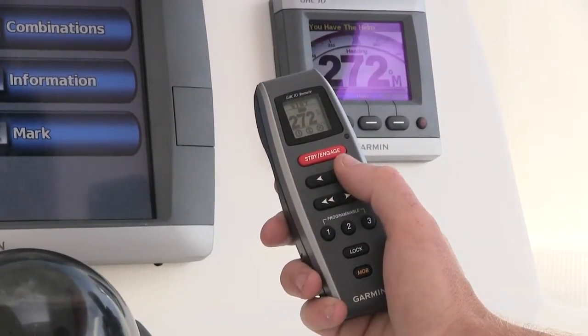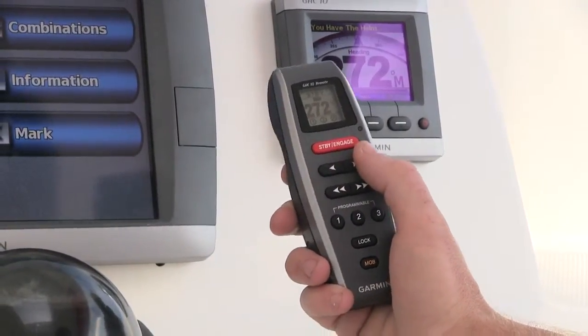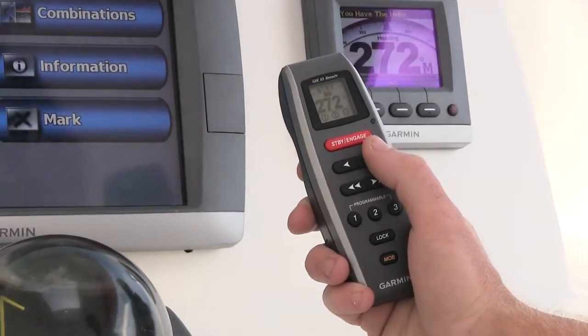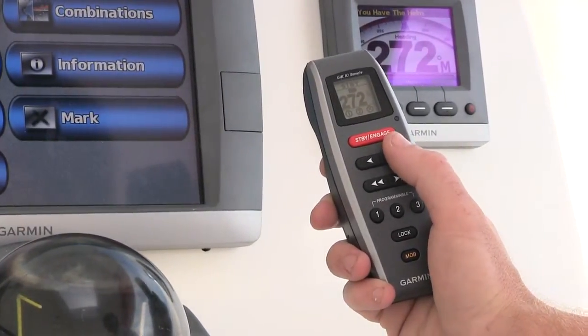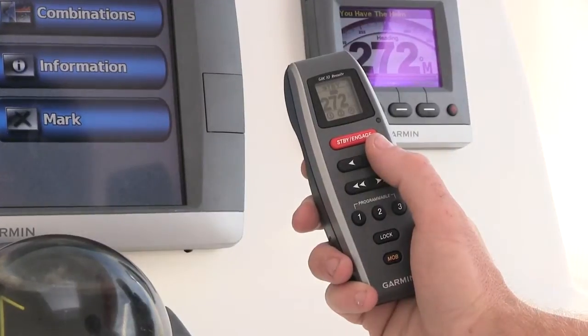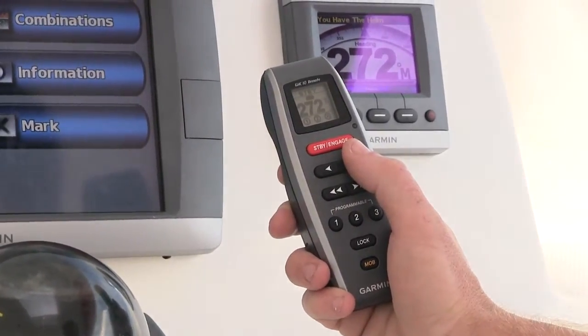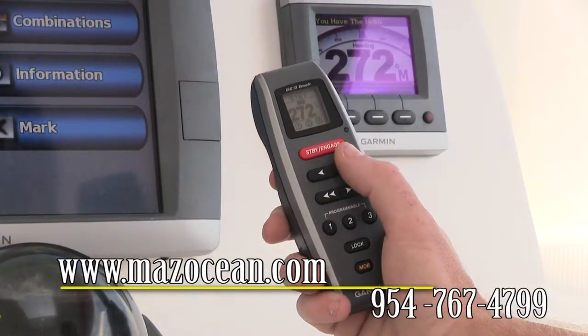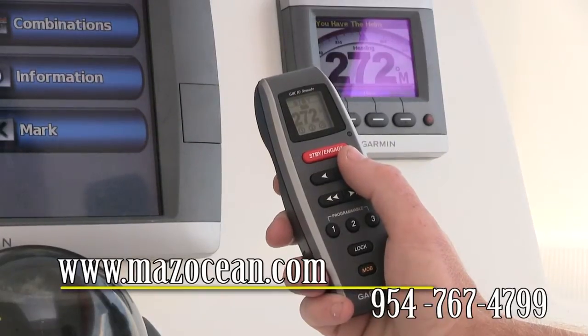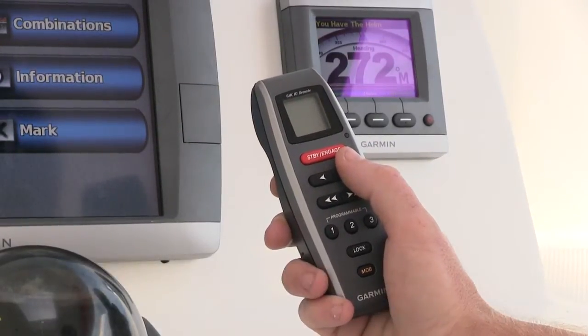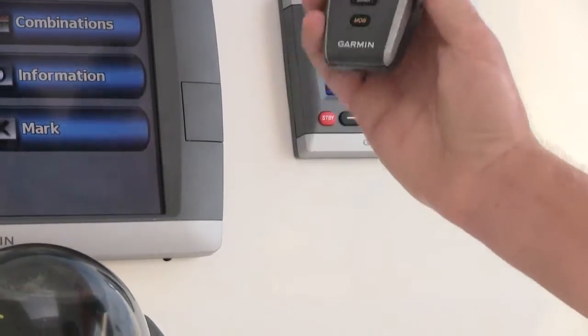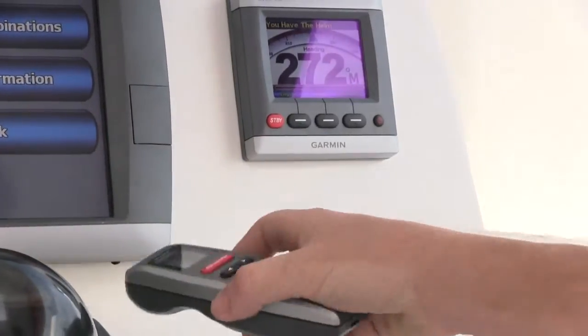One of the nice things that Garmin have just come out with is the remote control for the autopilot system. Really simple to connect. There's no extra cables or routers or anything like that. It's just simply putting in two AA batteries and you set it up and it works from anywhere on the boat. Really nice little add-on, not too expensive.